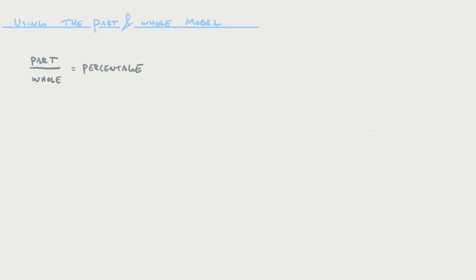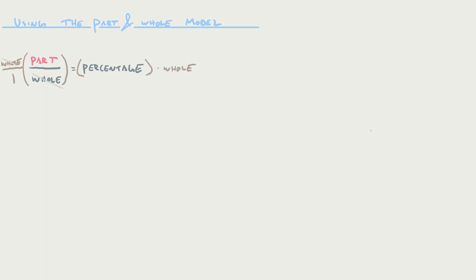Those are the three main types of questions we'll be looking at using this model. If percentage and whole are given and we need to figure out the part, I would start with the part and whole model and notice that to get the part by itself I need to multiply both sides by the whole. If you have something in the numerator and something in the denominator they're going to cancel. Whatever you do to one side you have to do to the other, so multiplying both sides by the whole gives us: part equals percentage times whole. Again, it has to be in percent decimal form.